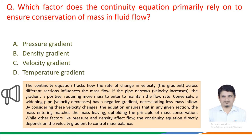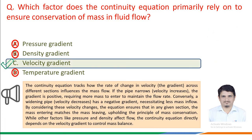What we must know: the continuity equation tracks how the rate of change in velocity — the gradient — across different sections influences the mass flow. If the pipe narrows, velocity increases and the gradient is positive, requiring more mass to enter to maintain the flow rate. Conversely, a widening pipe has decreasing velocity and a negative gradient, necessitating less mass inflow. By considering these velocity changes, the equation ensures that mass entering matches mass leaving, upholding mass conservation. While pressure and density affect flow, the continuity equation directly depends on the velocity gradient to control the mass balance. Therefore, the correct answer is option C: velocity gradient.